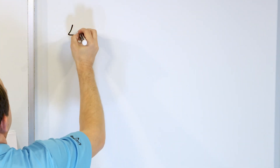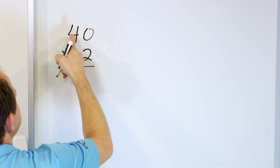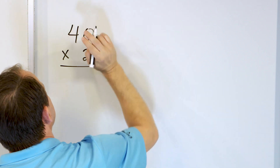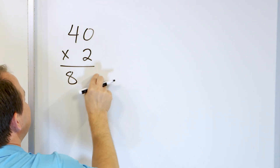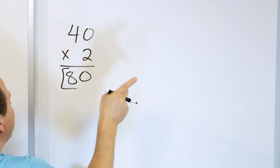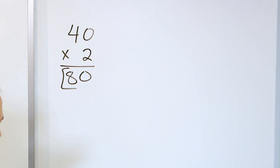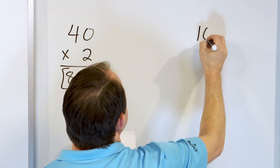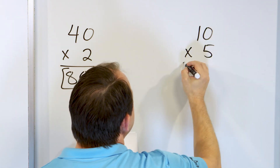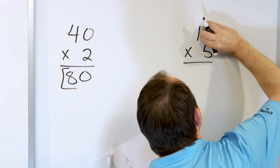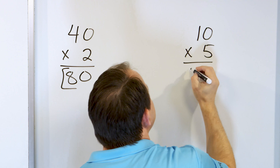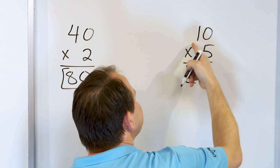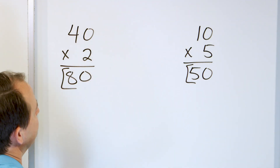What about 40 times 2? I'm multiplying by a multiple of 10, so I'll cover up the 0. What's 4 times 2? That's 8. Take that 0 and stick it on the back of the answer, and 40 times 2 is 80. What about 10 times 5? You already know the answer from your multiplication tables. Cover up the 0 — what's 1 times 5? That's 5. Take the 0 and stick it on the end, and the answer is 50. We know that from our multiplication tables.